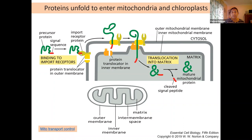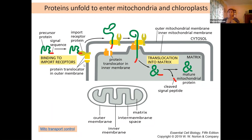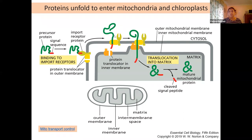The signal sequence is recognized as a binding place on that receptor, and that allows it to move through into the actual mitochondrial space. Here the receptor is bound to the membrane and the signal sequence is recognized on that receptor. The receptor is in combination with a protein translocator — just like we looked at many types of proteins that interact in the plasma membrane, some proteins are bound to each other to form a working complex. This is an example of that.